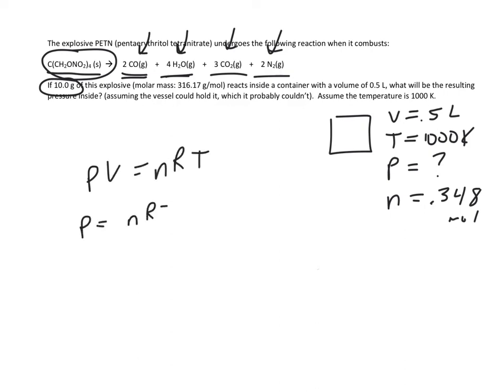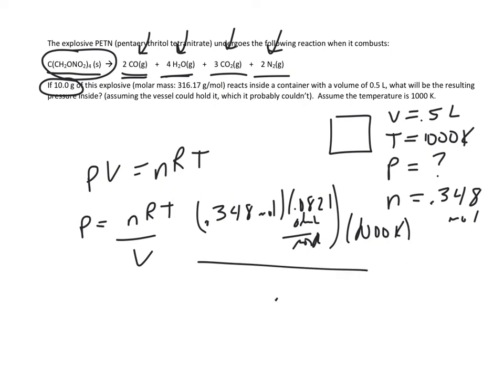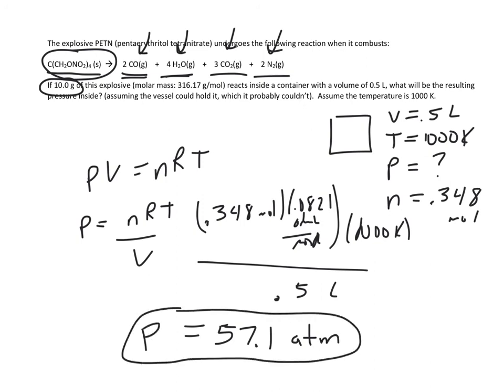We'll just plug in all our numbers, so 0.348 moles and the ideal gas constant 0.0821 atmosphere liters over mole Kelvin. I know I'm not writing that very well here. 1000 Kelvin and divide by our volume of 0.5 liters, and we'll get our final answer of 57.1. And because we use the constant with atmospheres, we're going to get this in units of atmospheres. So the pressure, if this container could hold it - which 57 atmospheres is quite a pressure, probably couldn't, and that's why it would break apart - but that would be it.